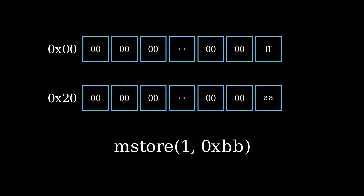The memory location to start writing from doesn't have to be a multiple of 32. For example, we can start writing from memory location equal to 1. From here, we write 32 bytes, ending with the value 0xBB. This value 0xBB will be padded with 31 bytes of zeros to the left. So when this code is executed, the value FF at the end of row 1 will first be overwritten with 00, and then at the beginning of the second row, the value 00 will be overwritten with the value BB.